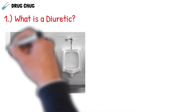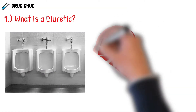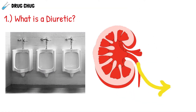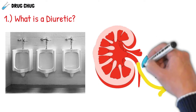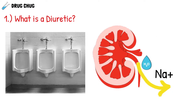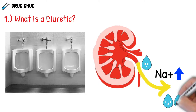So what exactly is a diuretic? It's something that causes diuresis, which just means it makes you pee. Pee is just water with some waste, and our kidneys filter our blood for waste which turns into urine. The most important thing in urine that we focus on is sodium, because water follows sodium — the more sodium in the urine, the more water follows, and the more we urinate.